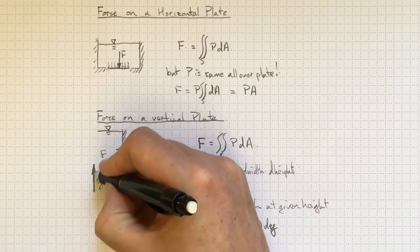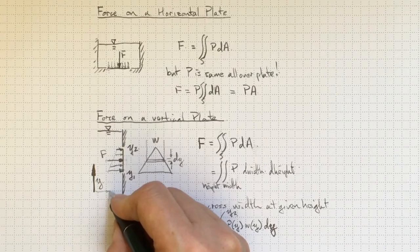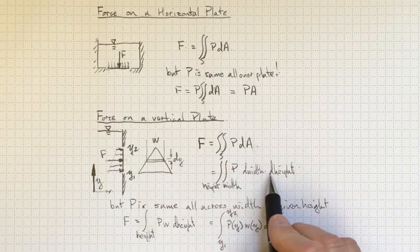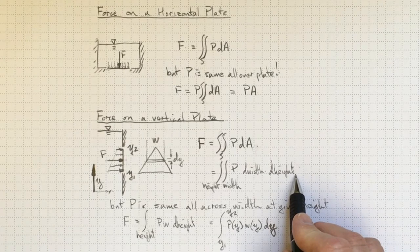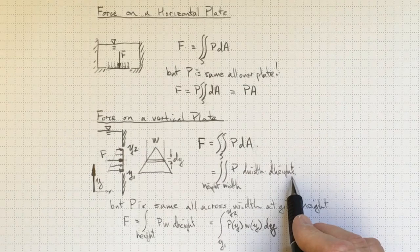If I hadn't chosen my y coordinate to be straight up and down and my x coordinate to be horizontal, then I would have wound up with having a more complicated integration to do here. It wouldn't have been impossible. It would have just been a little bit more difficult.